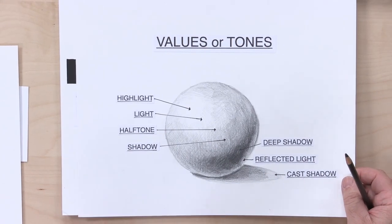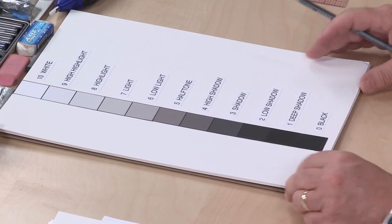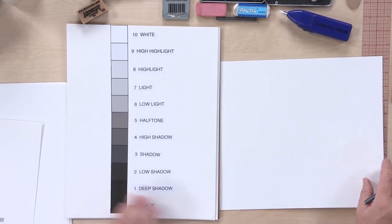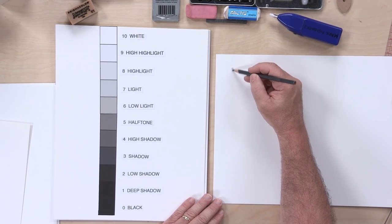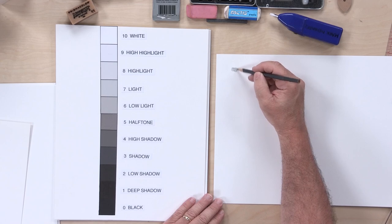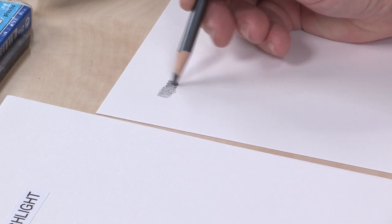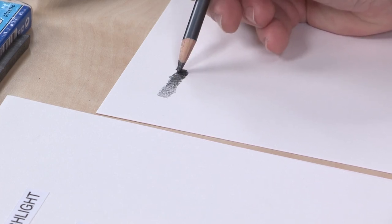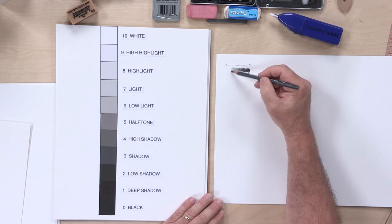One of the best ways to learn values and tones is to make a value scale, and I've made one for you right here. I want you to learn how to make one of these. Take a piece of paper, grab a pencil, and start as light as you possibly can, just doing a little patch. You'll see that my pencil keeps overlapping, coming back over a previous tone, making it darker as I continue through until I get to a very, very black color. Now there are all your values — you've got a good range of values through there.